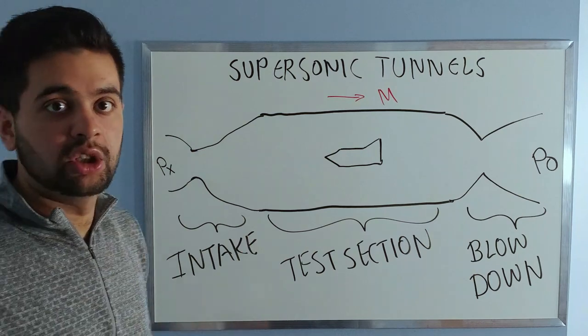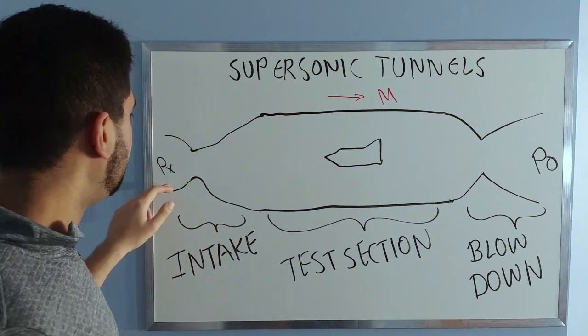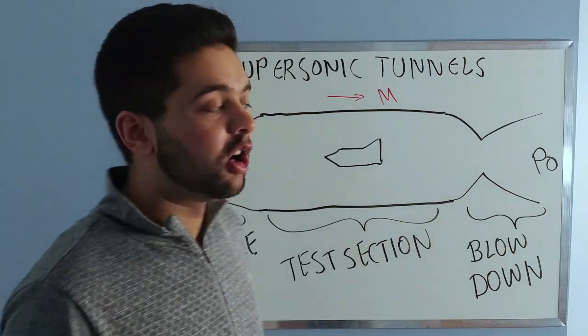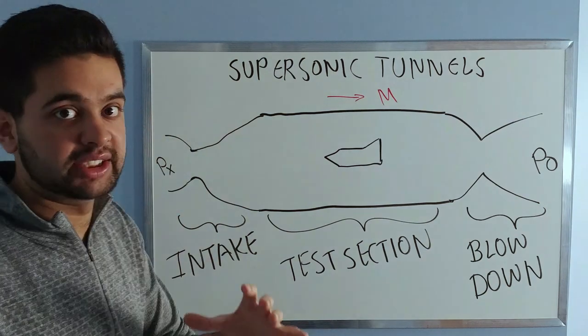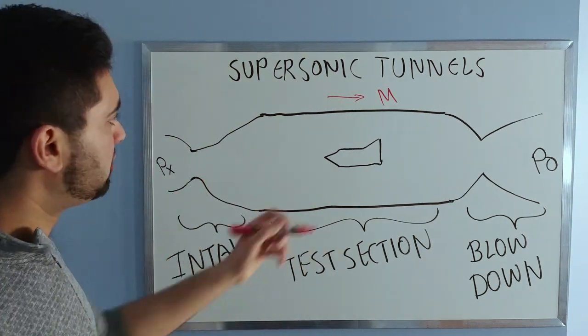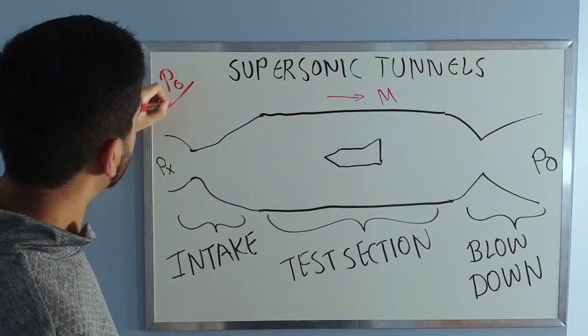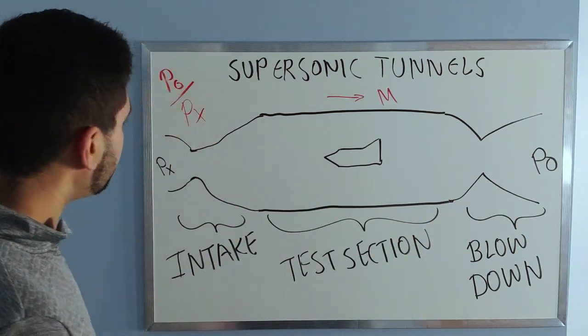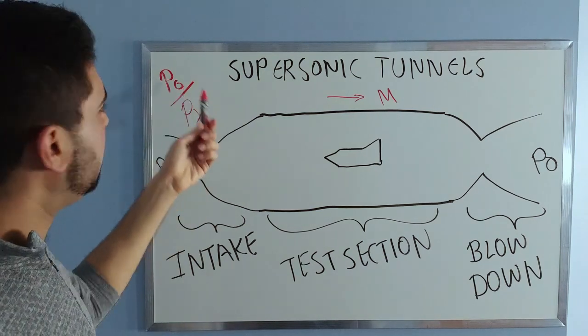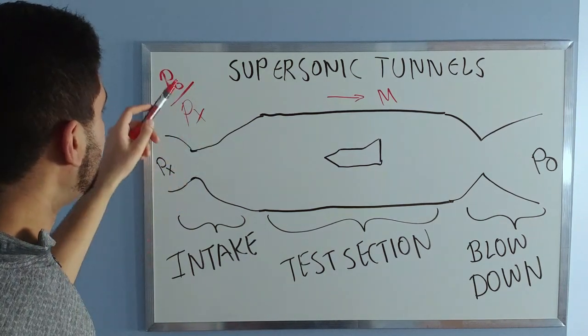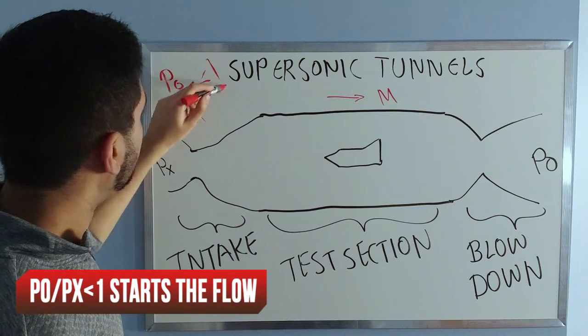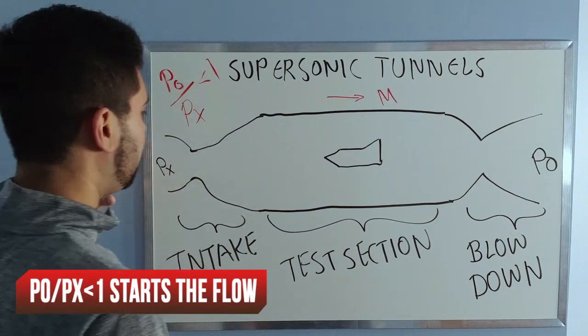When the tunnel is not started, the pressure here will be equal to the pressure there, or you'll have a tank with compressed gas kept as is. This pressure ratio, let's call it p0 over px. As you lower p0 or make this less than one, you will have air flowing from this tunnel.